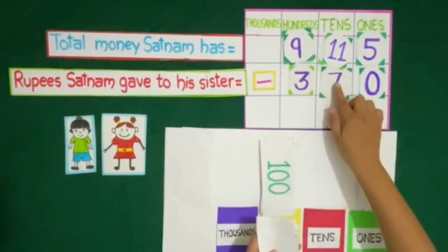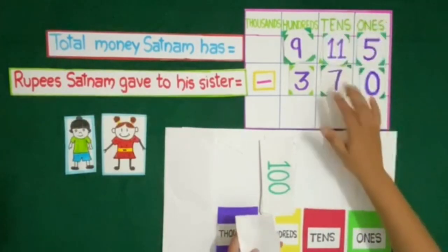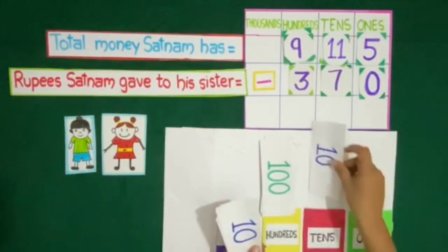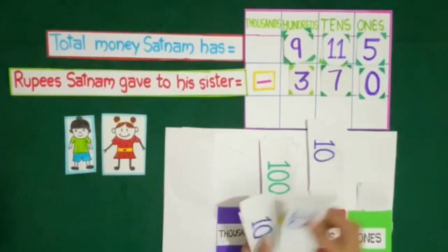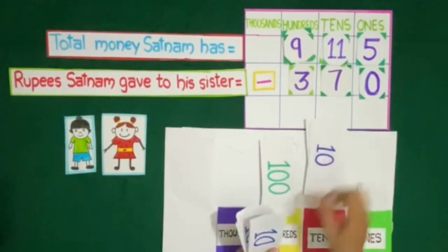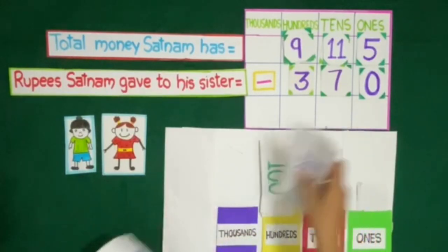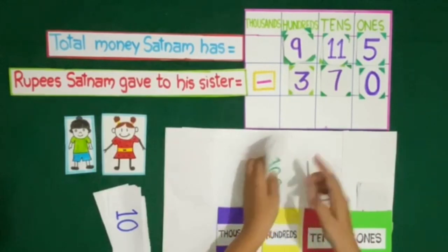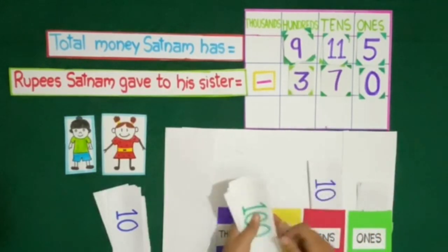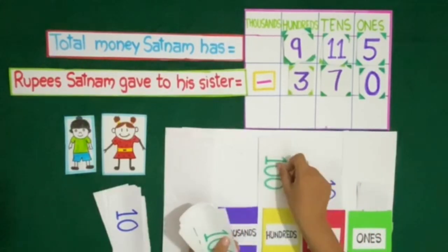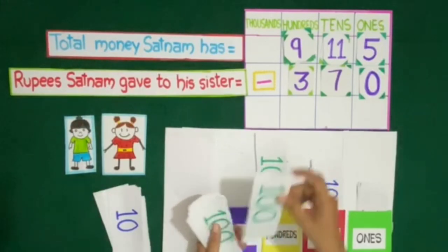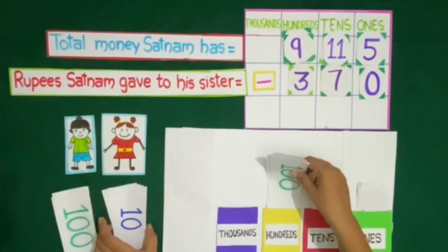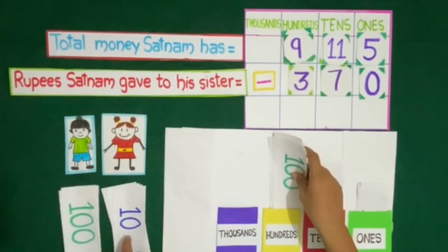Now we will give Satnam's sister 70 rupees from the 10 rupee notes: 10, 20, 30, 40, 50, 60, 70. And we will give 300 rupees from the 100 rupee notes: 100, 200, 300. So now Satnam's sister has received 370 rupees.